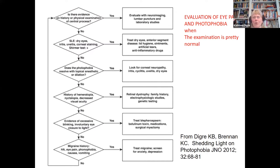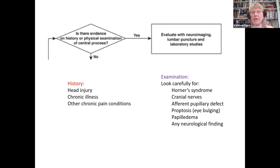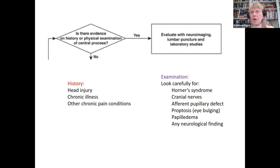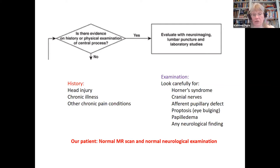We've developed an algorithm to evaluate eye pain and photophobia when the examination is basically normal. First, do a careful history and physical examination and think about central processes like head injuries, chronic illnesses, and chronic pain conditions. Look carefully for Horner syndrome — ptosis, miosis — check cranial nerves, look for an afferent pupillary defect, proptosis, papilledema, and any neurologic finding. Our patient had a normal MRI scan and normal neurologic examination, so we fulfilled this section and it was all normal.